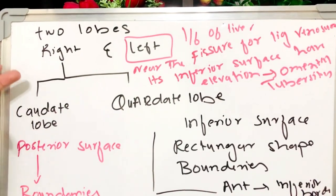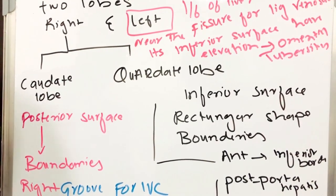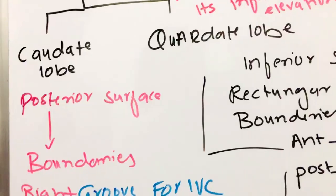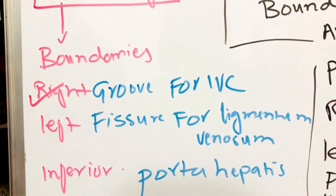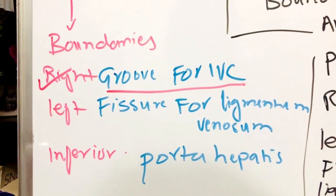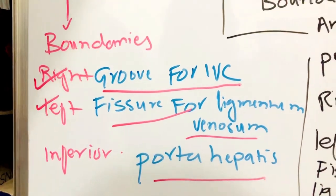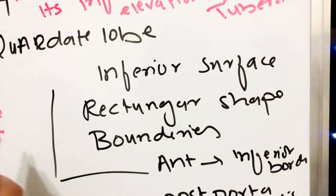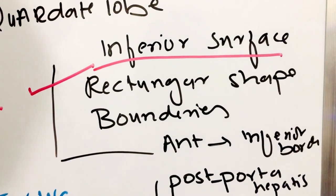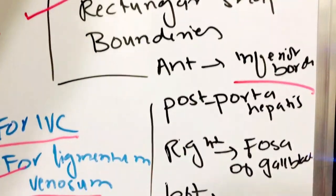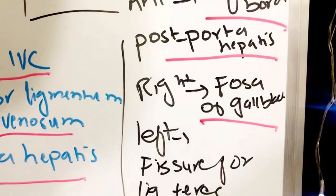The right lobe is further divided into two additional lobes: the caudate lobe and the quadrate lobe. The caudate lobe is present on the posterior surface and has three boundaries — the right boundary where we see the groove for the inferior vena cava, the left boundary where we see the fissure for the ligamentum venosum, and the inferior boundary where we see porta hepatis. The quadrate lobe is present on the inferior surface and is rectangular in shape. Its boundaries are: the anterior boundary at the inferior border, the posterior boundary at the porta hepatis, the right boundary near the fossa of the gallbladder, and the left boundary at the fissure of ligamentum teres.